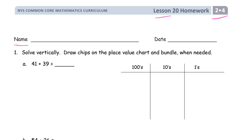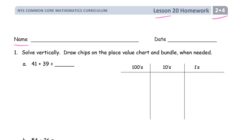The first mistake that's often made is: you've written it upright, the ones digits are on top of each other, the tens digits are on top of each other, everything's in alignment — but there's no room up here for bundling. If you have to bundle anything, there's no room to write that you've bundled it. And that's really important. So if you can help it, don't do that. Give yourself a little bit of room.